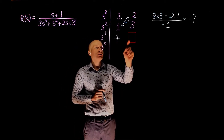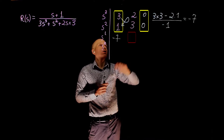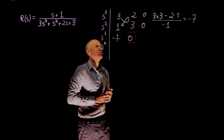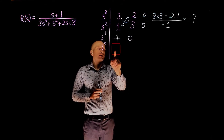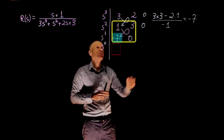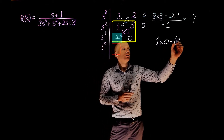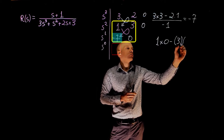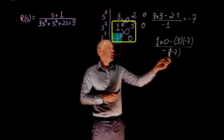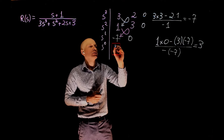Now we have to find the next element, which is necessary to complete the array. We expand the matrix with 0 and 0, and compute 3 times 0, minus 0 times 1, divided by negative 1 — that is of course 0. Then, for the final element, we have 1 times 0, minus 3 times negative 7, divided by negative 1 divided by negative 1, which gives positive 21 divided by positive 7, that is 3.